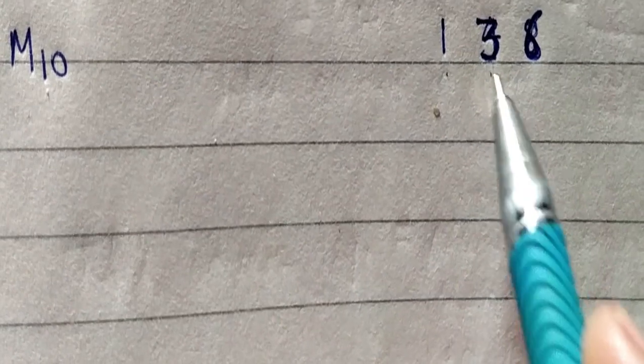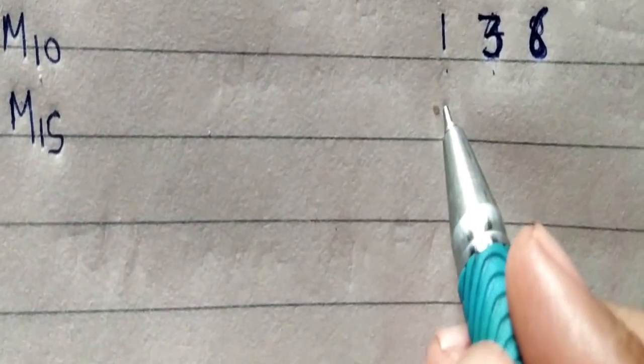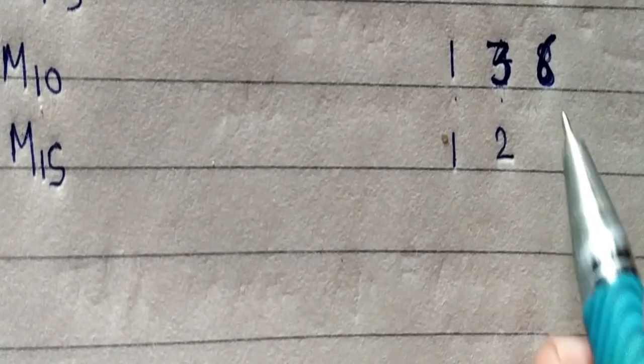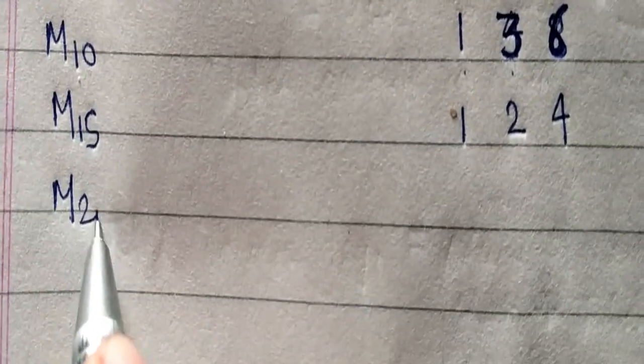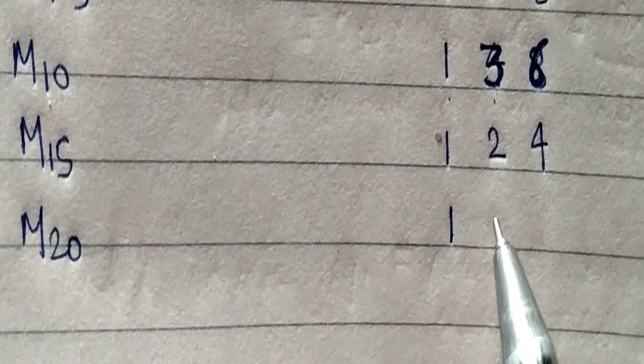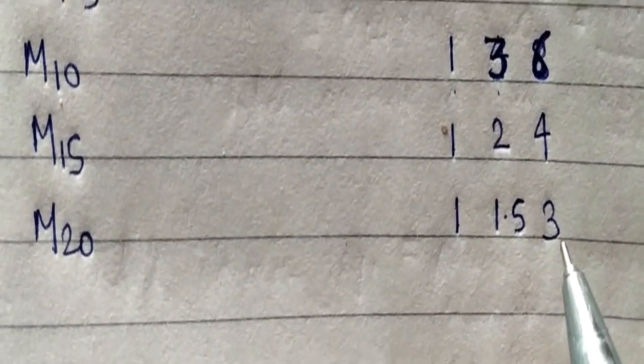For M10, 1:3:6 - 1 cement, 3 sand, 6 aggregate. For M15, 1:2:4 - 1 cement, 2 sand, 4 aggregate. For M20, 1:1.5:3 - 1 cement, 1.5 sand, 3 aggregate.